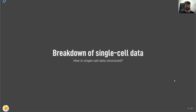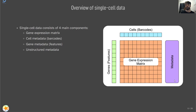In our first section we'll be looking at how single cell data is structured. Single cell data is really broken down into four main components: first, our gene expression matrix, which stores our gene expression values; our cell metadata and gene metadata, commonly referred to as barcodes and features respectively; and finally our unstructured metadata, which stores everything else. We're going to cover each of these in the following slides.